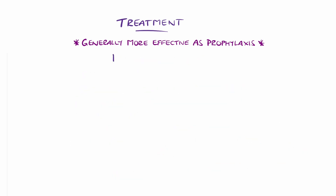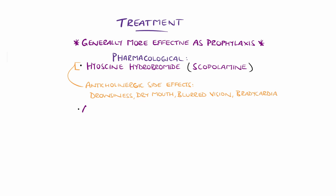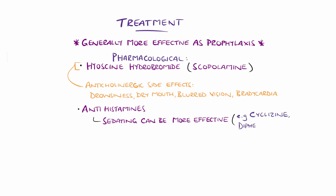Pharmacological options include hyoscine hydrobromide, which can be oral or transdermal patches, known as scopolamine in the United States. It is often used in those over 12 years of age, commonly as a patch behind the ear. Anticholinergic side effects include drowsiness, dry mouth, blurred vision, and bradycardia. Antihistamines are another option, with sedating ones seemingly being more effective, for example cyclizine or diphenhydramine, and antidopaminergics can also be used, like promethazine.